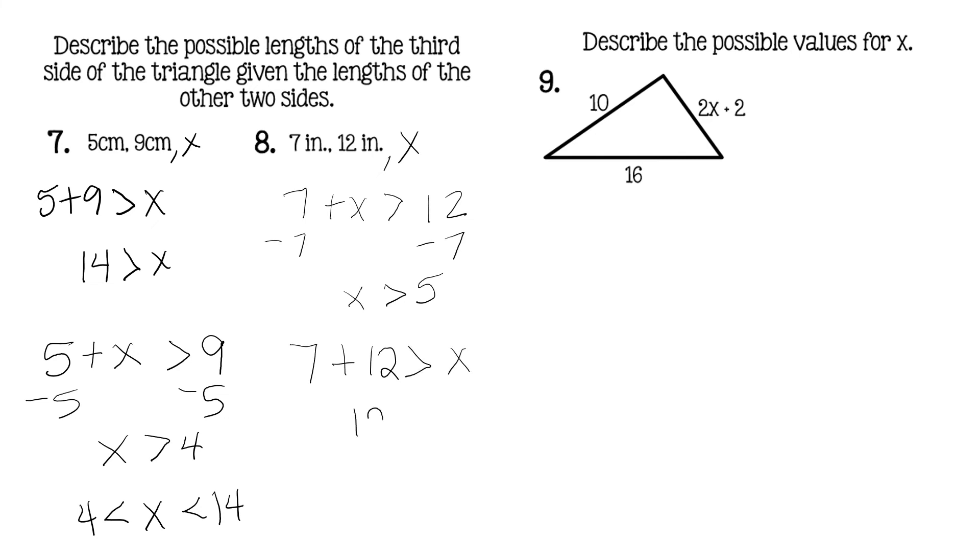Or that X is the greatest side, so we'd say 7 plus 12 is greater than X. So 19 is greater than X. So in other words, X has to be somewhere in between. Our lowest level range is 5, and our highest range is 19. So it's somewhere between those, can't be exactly those, but it has to be somewhere between those.